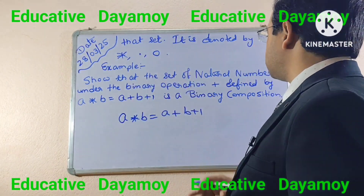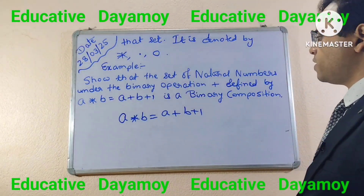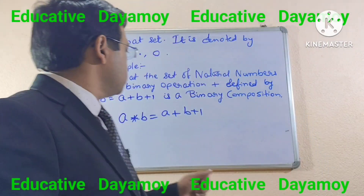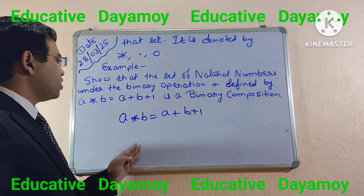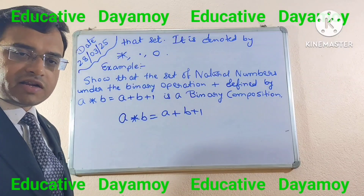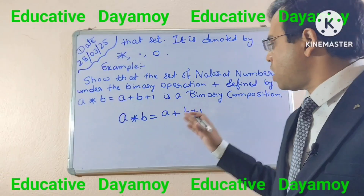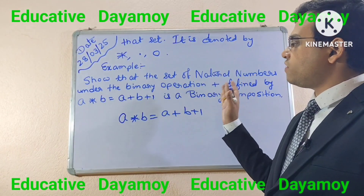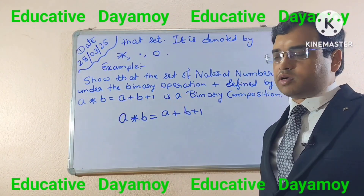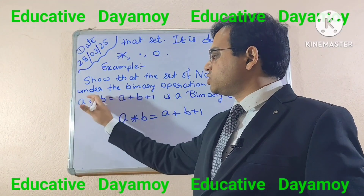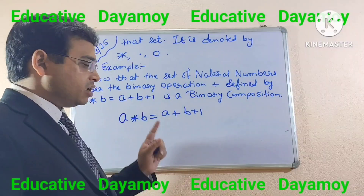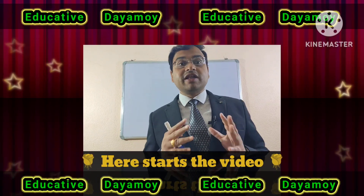The question states: show that the set of natural numbers under the binary operation plus, defined by A asterisk B equals A plus B plus 1, is a binary composition. Here the binary operation given is plus, the set given is the set of natural numbers, and the operation is defined by A asterisk B equals A plus B plus 1.